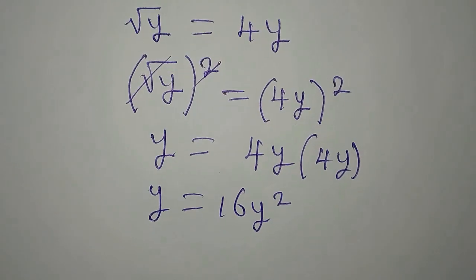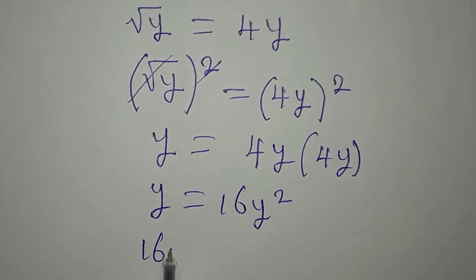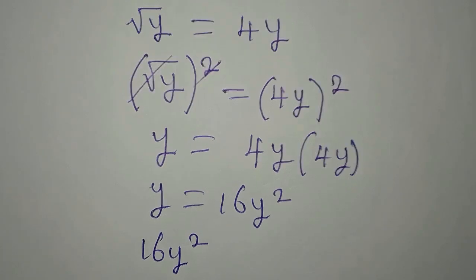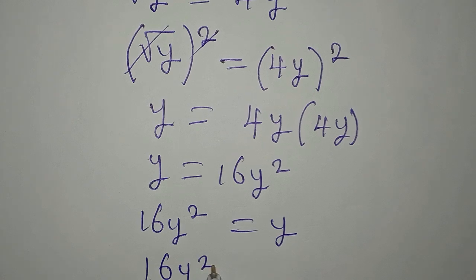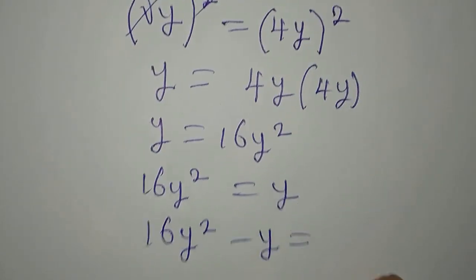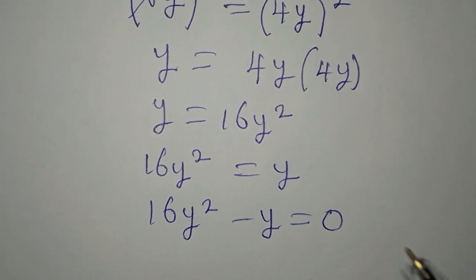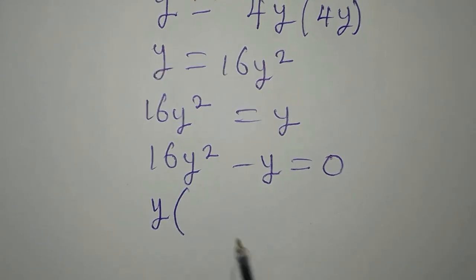Y is equal to 16y squared. And you are supposed to write the one with the highest power first, so we have 16y squared, then equal to y. 16y squared minus y equals 0.